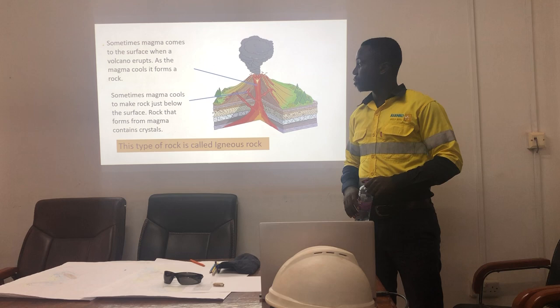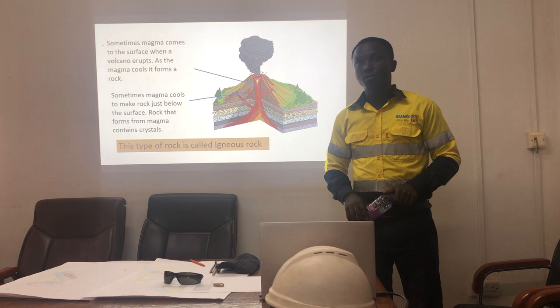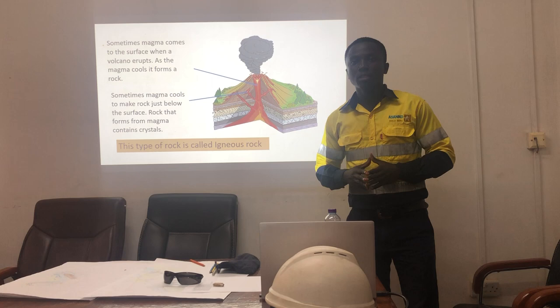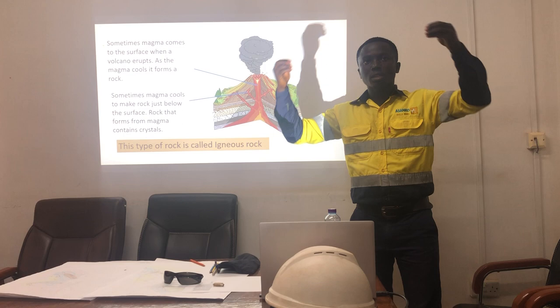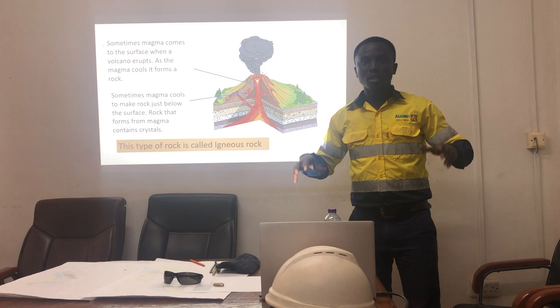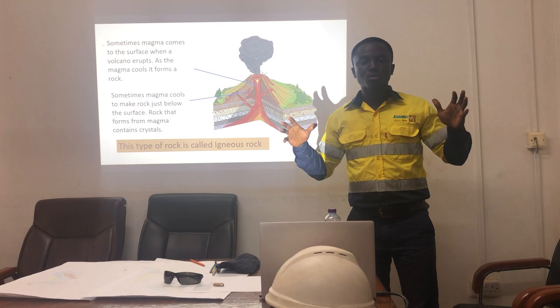The igneous rock is the first rock we want to look at. Igneous rock is formed from volcanic eruption. At a point in time, magma tries to find its way through the crust onto the earth's surface — when that happens, we say there is a volcanic eruption. The magma that comes out cools down, solidifies, and crystallizes, leading to the formation of igneous rock. We may view igneous rock as a fire formation — the word igneous comes from a Latin word meaning fire.